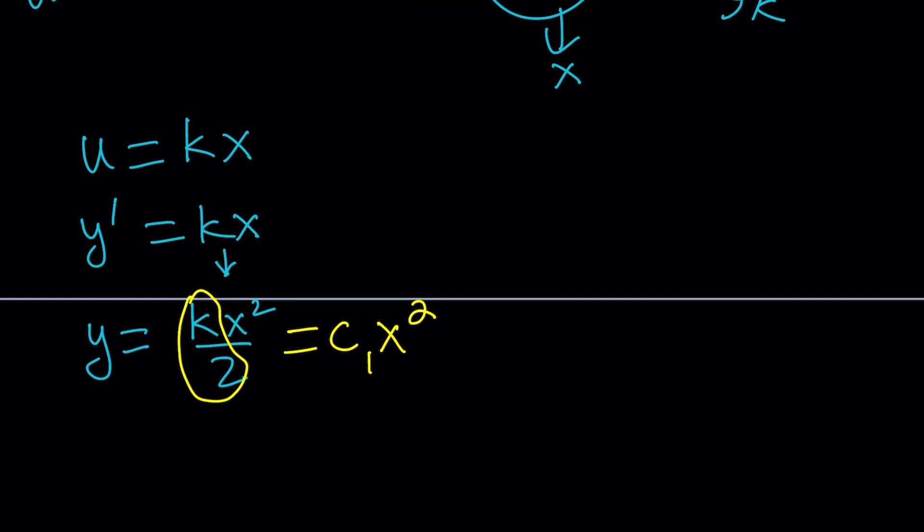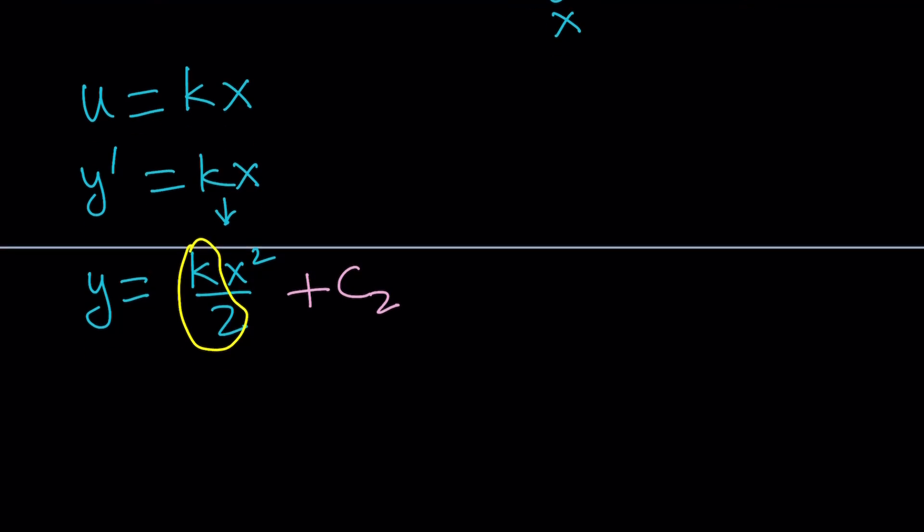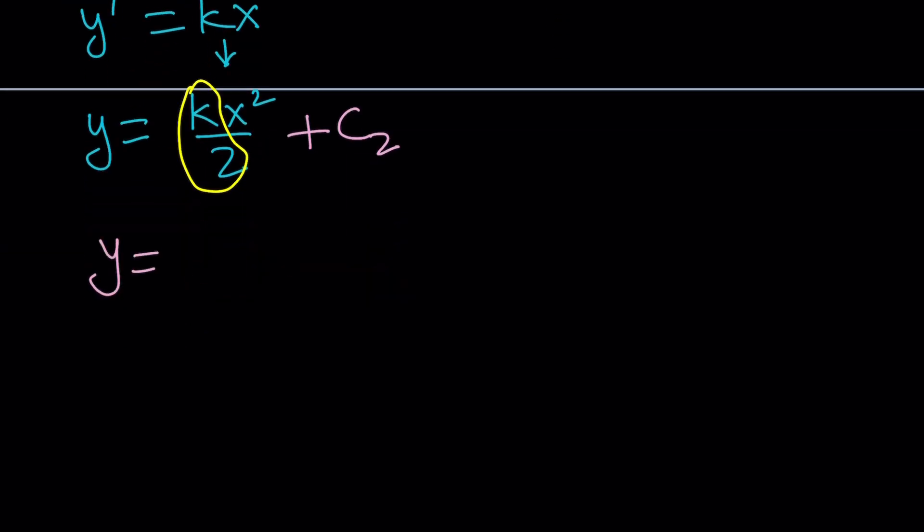Wait a minute. We forgot to do something. Forgot to add the constant, which is very important, right? You lose a lot of points. Let's back up a little bit. We're going to be adding a constant, because we're integrating kx. It's going to be kx squared over 2, which I called c sub 1x squared, plus another constant. And I guess at this point, we can call this c sub 2, because I'm about to call this c sub 1. So, y equals c sub 1x squared plus c sub 2 is going to be the solution.